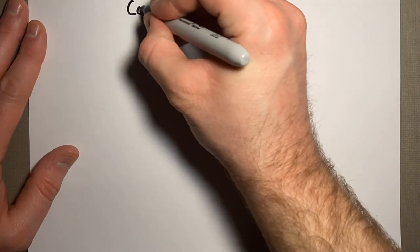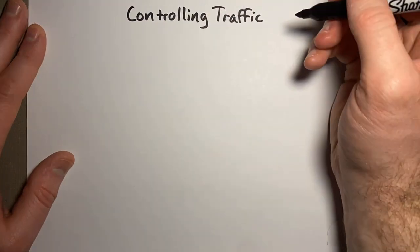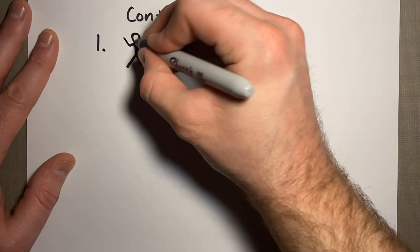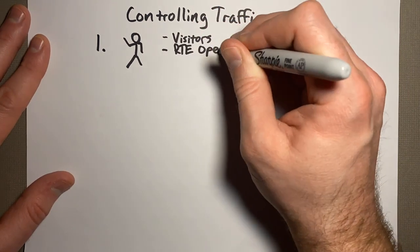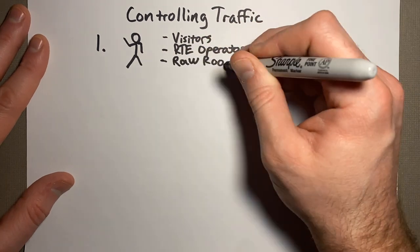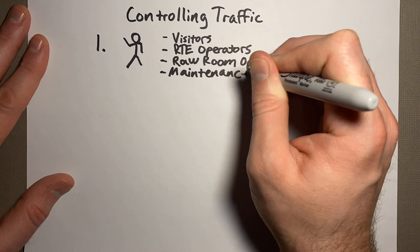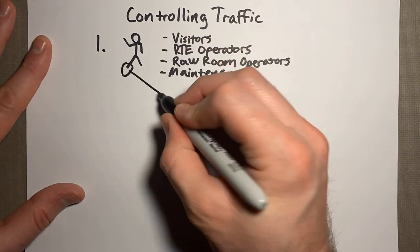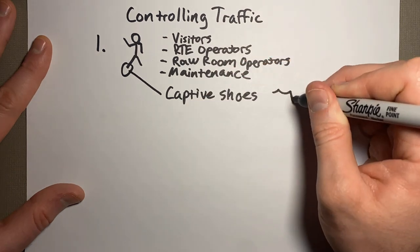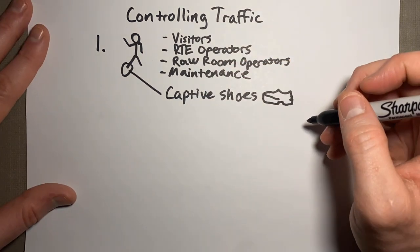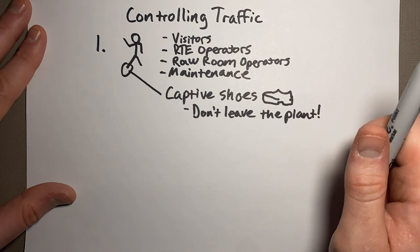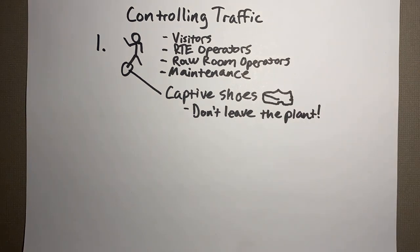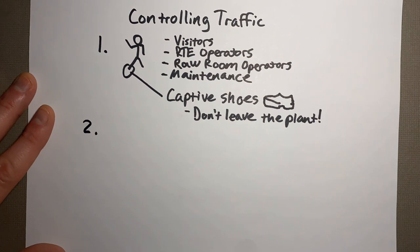The second concept is controlling traffic — specifically where people, wheels, and ingredients are going in your plant. Visitors: where are they allowed to go? Ready-to-eat room operators and raw room operators should not cross between areas. You don't want your raw room operator messing with finished product. Maintenance should also be considered. Everyone should have captive shoes that don't leave the plant, and uniforms shouldn't leave the plant either. Best practice: if you are a raw room operator, use specific uniforms for that particular room.